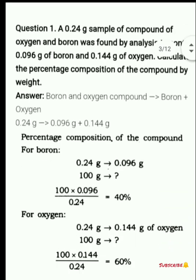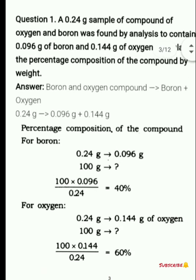The first question given in your NCRT books is: a 0.24 gram sample of a compound of oxygen and boron was found by analysis to contain 0.096 gram of boron and 0.144 gram of oxygen. Calculate the percentage composition of the compound by weight. So you have a sample of weight 0.24 gram.